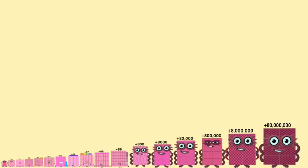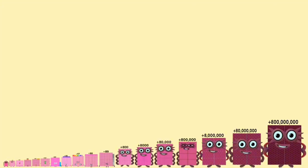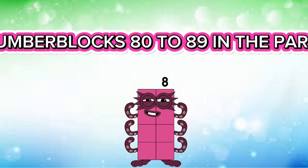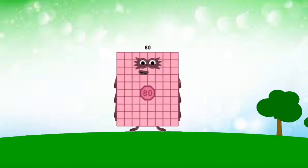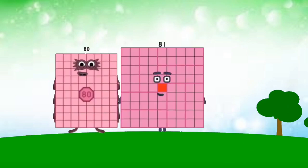Positive 80 million. Positive 800 million. Number blocks 80 to 89 in the park. 80. 81. 82.